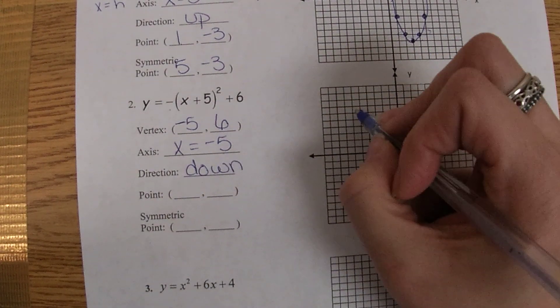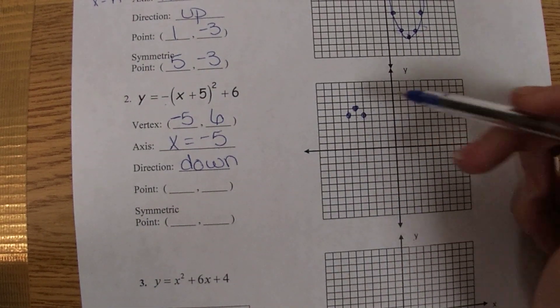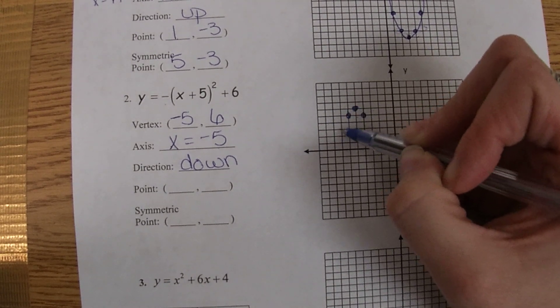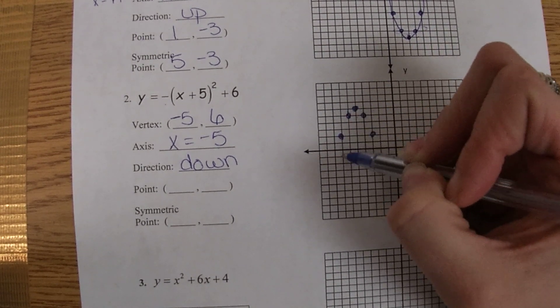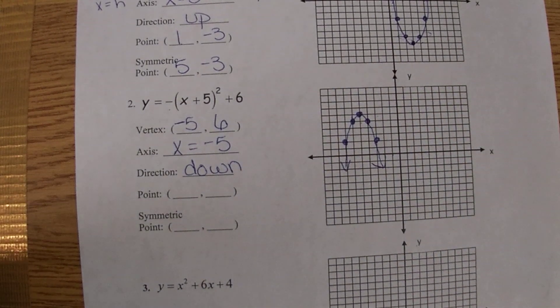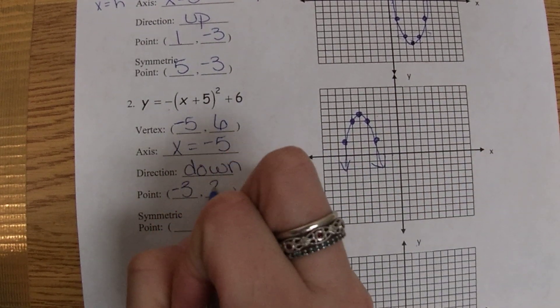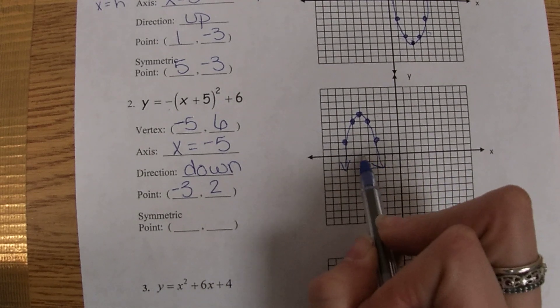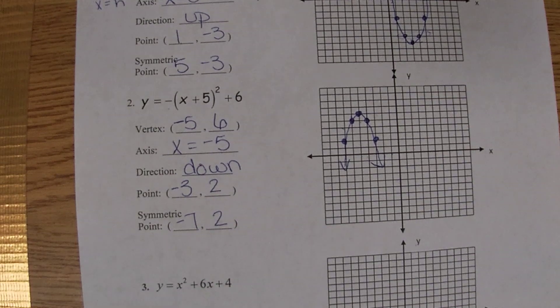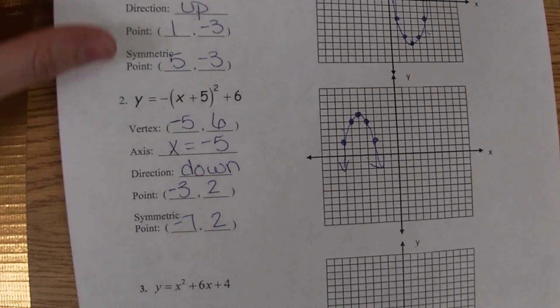But now because it opens down, I'm going to go over one down one on each side, and then over two down four. There's my parabola. Then I can name a point and a symmetric point, so I have the point negative three positive two and then negative seven positive two. You also could have named the upper two points. The vertex is not part of a point and a symmetric point, so make sure you don't list that there.